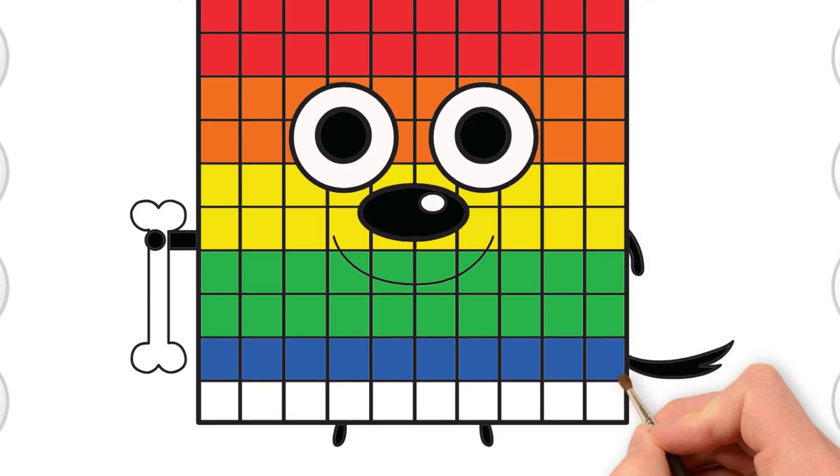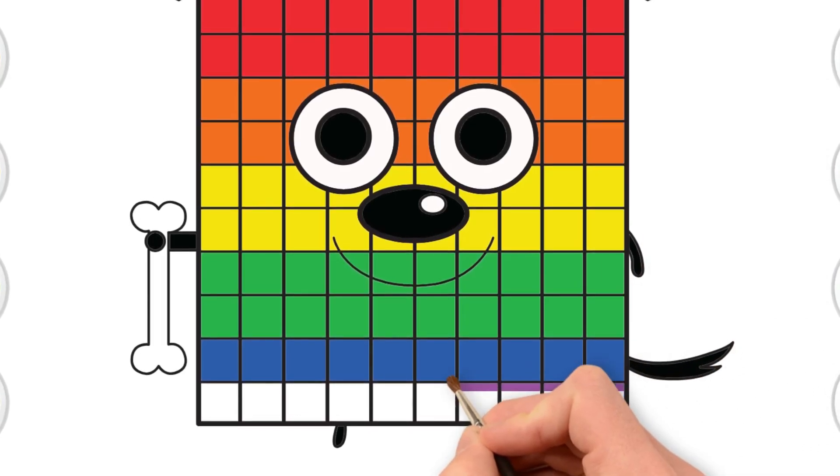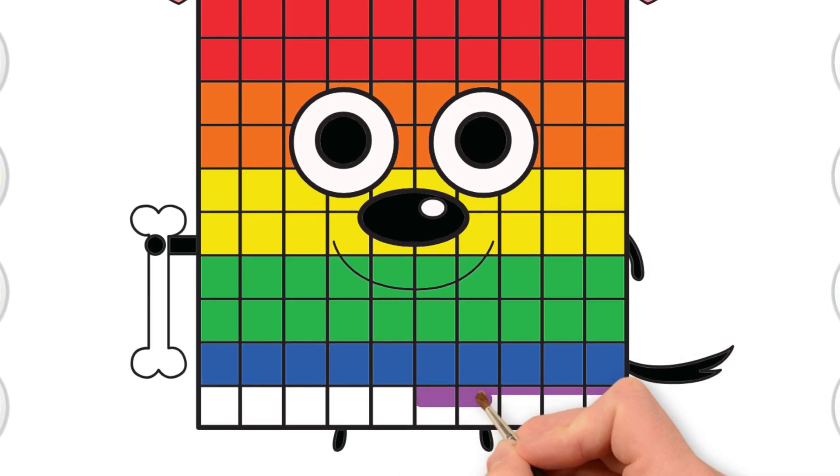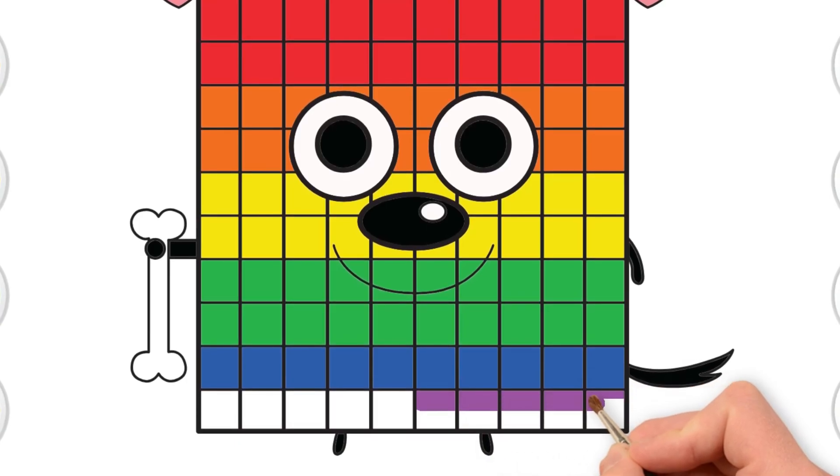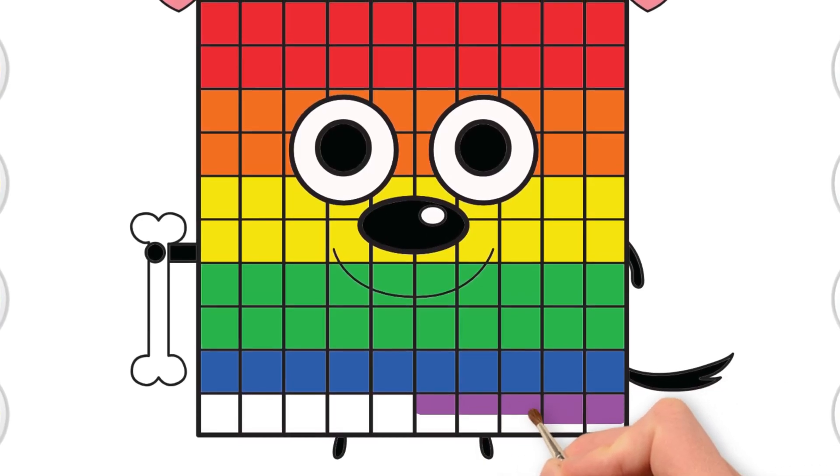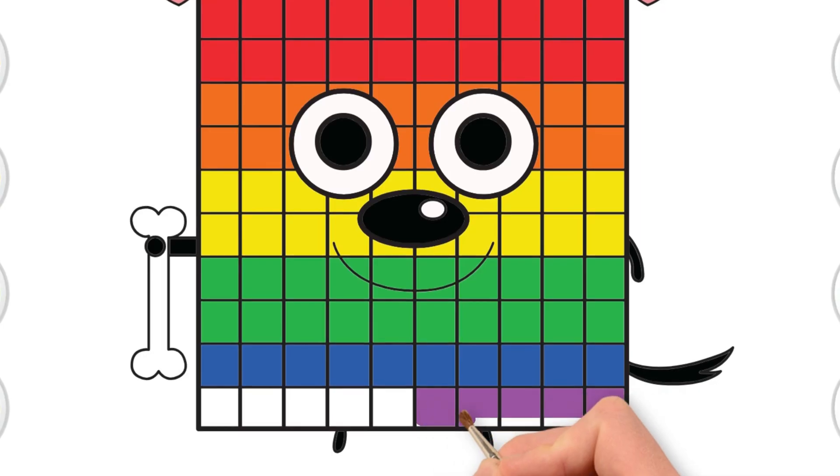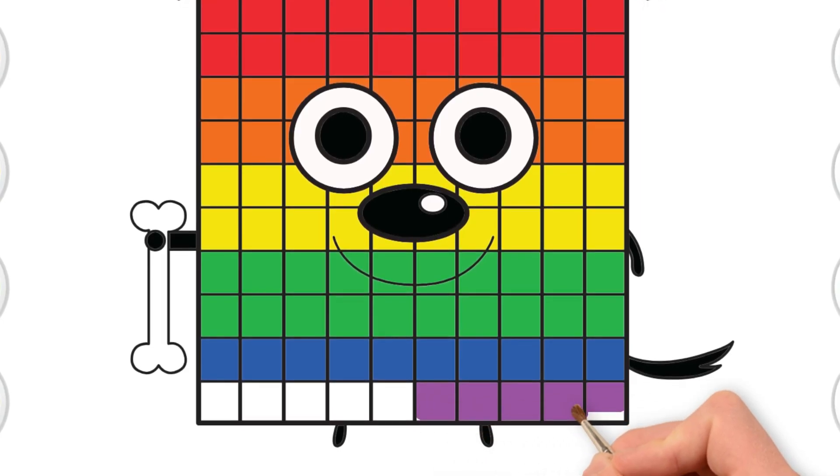Color the last row purple. Now let's count all the way by ten. Ten, twenty, thirty, forty, fifty, sixty, seventy, eighty, ninety, one hundred.